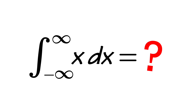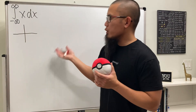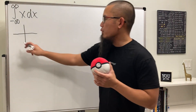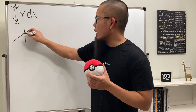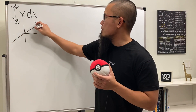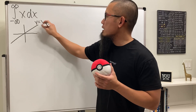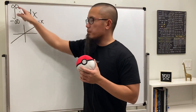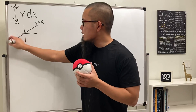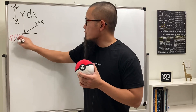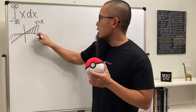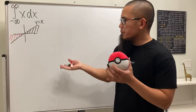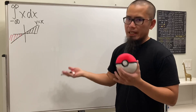What is the integral from negative infinity to positive infinity of x? We can refer to a graph — looking at the graph of y equals x, which is just this line, and because we are going from negative infinity to positive infinity, we consider this region and also that region, and they seem to be the same size.